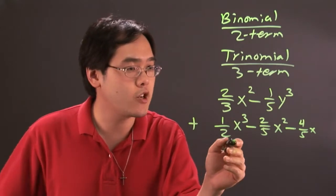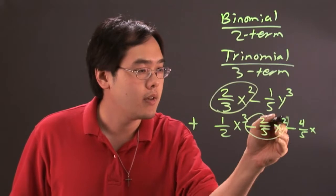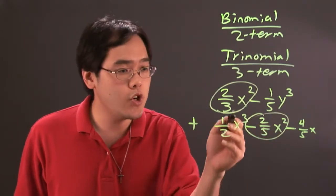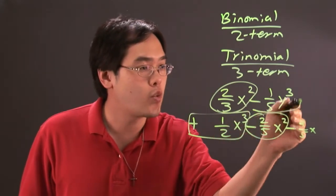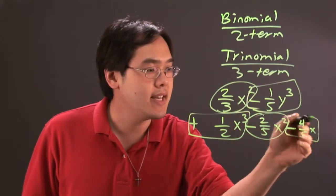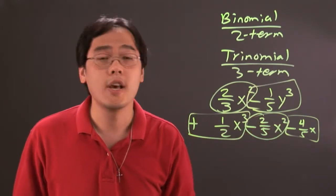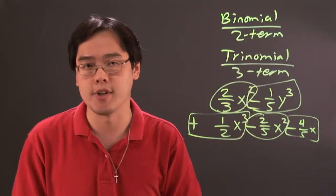So, the like terms are the x squared, and looking at the example that we have, that's pretty much it. So what you really have to do is these terms are rewritten as is. That means the y cubed term, the x cubed term, and the x term are written as is. The only ones you can combine is the x squared terms, but you would have to find the least common denominator to do that.